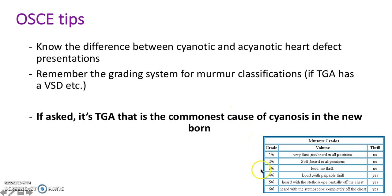Here are the murmur grades — there are six in total. The first three have no thrill and the second three have a thrill. Grade one is really faint and not heard in all positions. Grade two is soft and can be heard in all positions with no thrill. Grade three is loud with no thrill. Grade four is loud with a thrill. Grade five is heard with a stethoscope partially off the chest with a thrill. Grade six is heard with a stethoscope completely off the chest with a thrill.